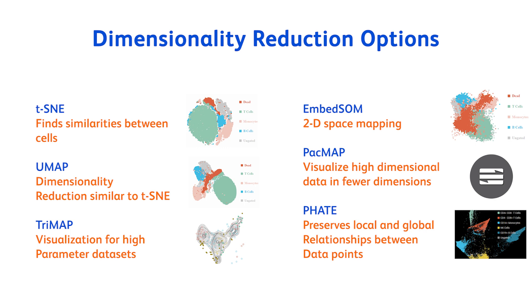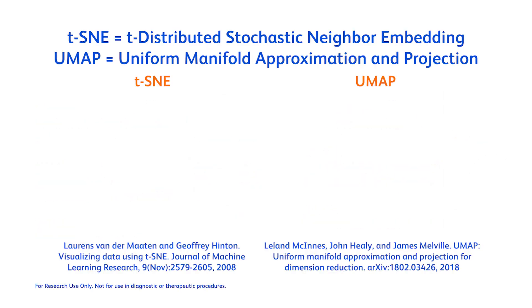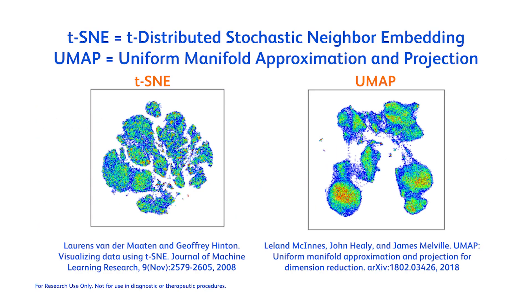Within FlowJo, we currently have six dimensional reduction algorithms: t-SNE, UMAP, TriMap, PaCMAP, BidSum, and FATE. The most commonly used in the field are t-SNE and UMAP.